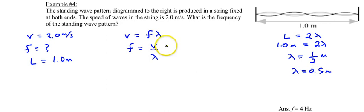So now that we know the wavelength we simply plug into our equation. Our speed is 2 meters per second and our wavelength is 0.5 meters and so we get a frequency of 4 hertz.